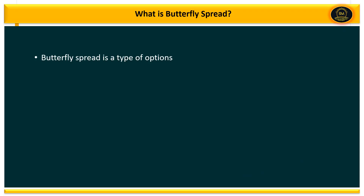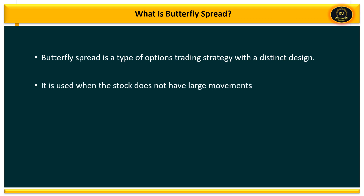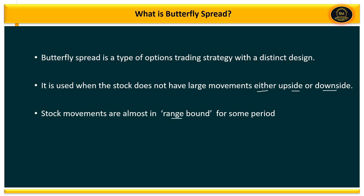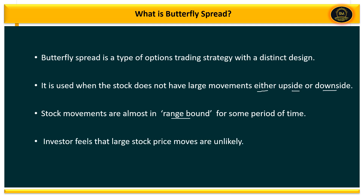Butterfly spread is a type of option trading strategy with a distinct design. This distinct design means it is used when the stock does not have any large movement either upside or downside. The stock is not showing any significant move — it is in a range-bound movement for some period of time, and the investor feels that large stock price moves are unlikely to happen.